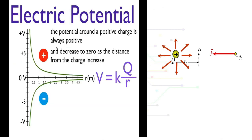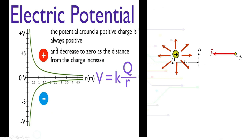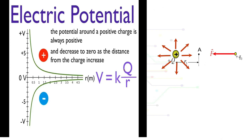From the equation of electric potential V = kq/r, we know that the magnitude of electric potential V is inversely decreased by r.